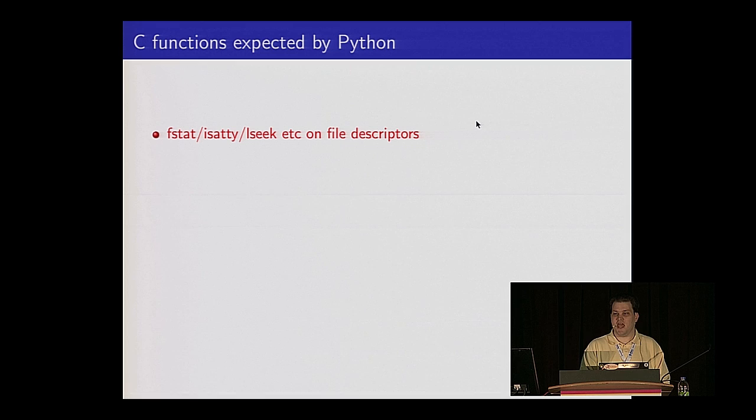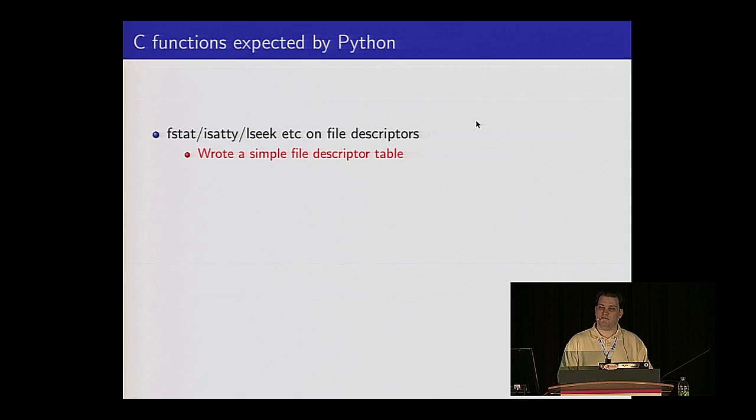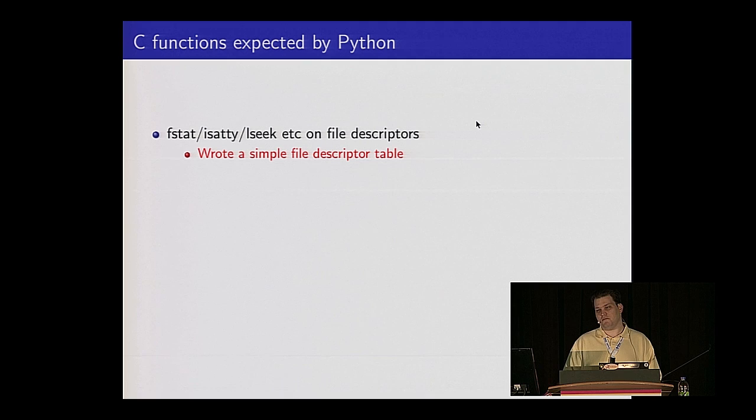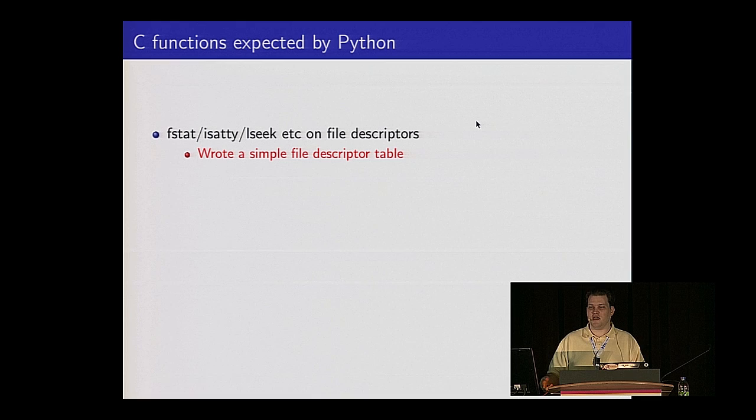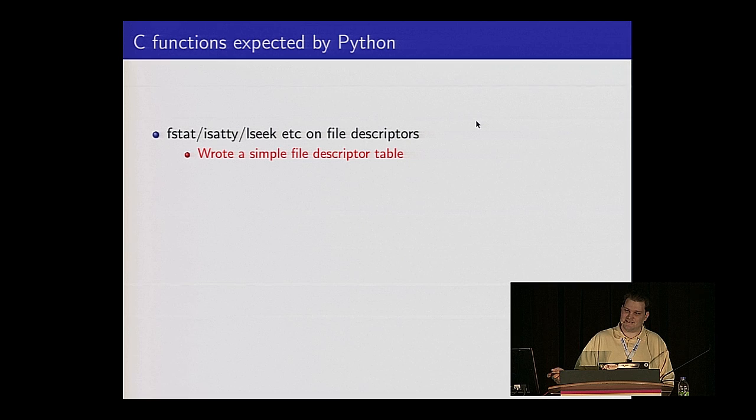We have seek — the Grub file layer didn't have an lseek function, so we added one for compatibility. And to support file descriptors, we actually needed a file descriptor table — a small integer that corresponds to a file. Grub's layer looked more like the C standard IO layer where you have a file structure pointer, which was easy to support with a typedef. But to handle small integer file descriptors we had to write our own table. This was actually why it took some time to port to 64-bit EFI — when we were 32-bit only, we cheated and cast the pointer to an int.